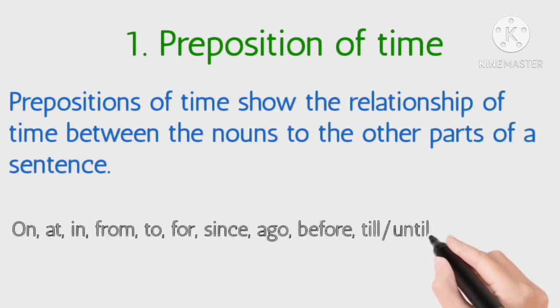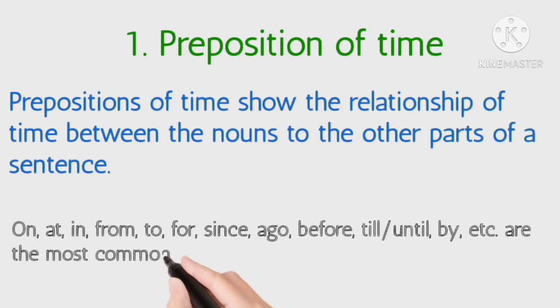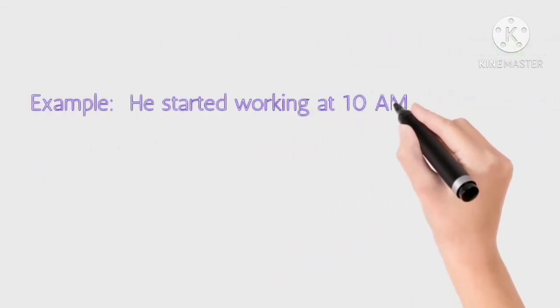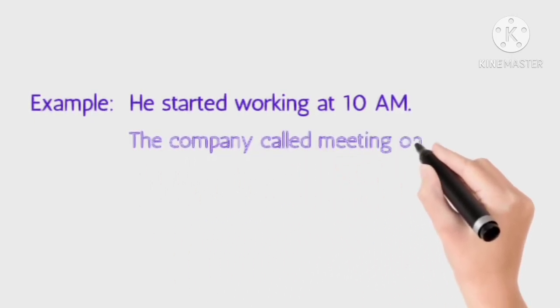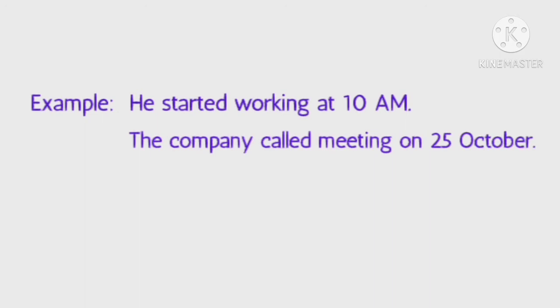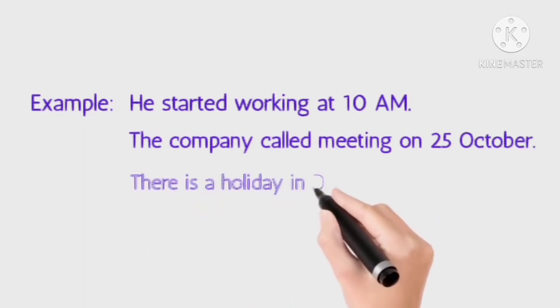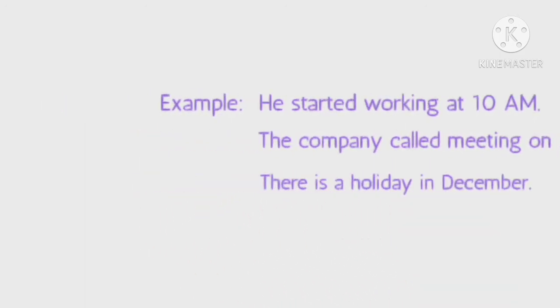Examples: on, at, in, from, to, for, since, ago, before, till, until, etc. He started working at 10am - at is preposition here. The company called meeting on 25th December. There is a holiday in December.